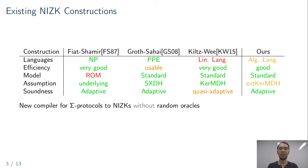In this work we present a new compiler for sigma protocols into non-interactive zero-knowledge arguments that does not require random oracles, has almost as good efficiency as Fiat-Shamir, achieves adaptive soundness, and works for the class of algebraic languages—considerably bigger than linear languages. It is secure under a new assumption we call the extended kernel matrix Diffie-Hellman assumption, which is a natural extension of the regular kernel matrix Diffie-Hellman assumption.